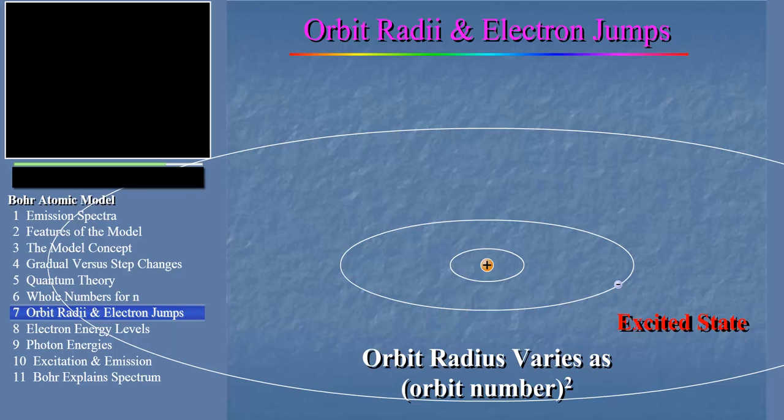Now, the electron, being lazy like the rest of us, doesn't want to stay out there in the excited state. It wants to fall back down to the ground state. The only way it can do this is to throw off some of its energy. And this it does by emitting a photon of light.